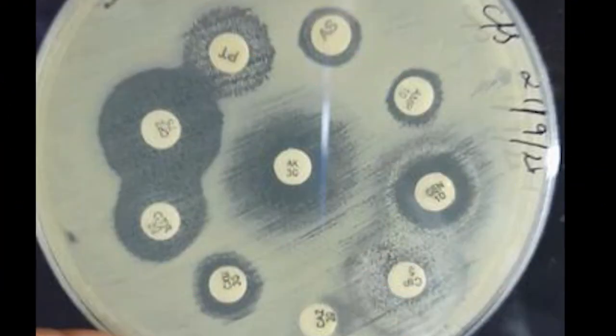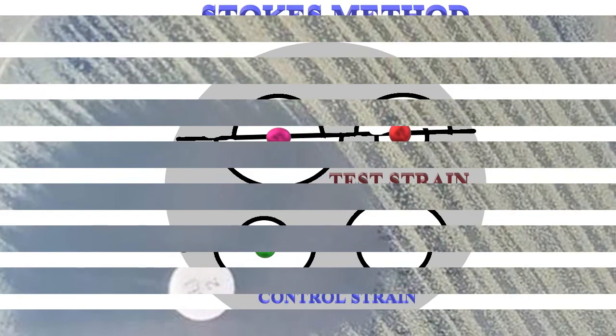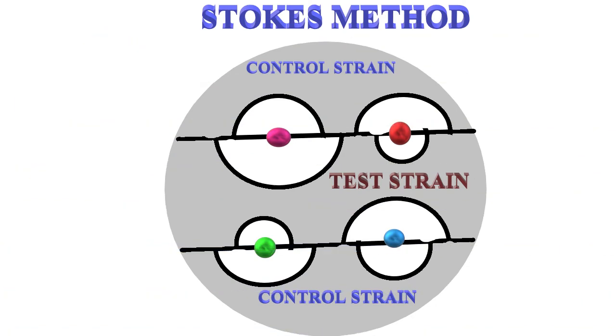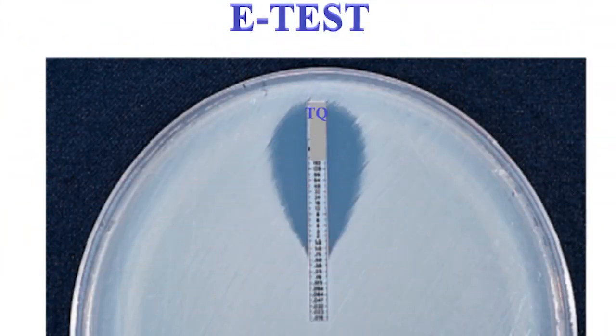Antibiotic sensitivity testing is the measurement of the susceptibility of bacteria to antibiotics. Sensitivity testing helps the clinician in the choice of antibiotic for treatment. Methods: Kirby-Bauer disk diffusion method is commonly used in the lab. A quantitative method using minimum inhibitory concentration (MIC) describes the concentration of antibiotic to which a bacteria is sensitive.